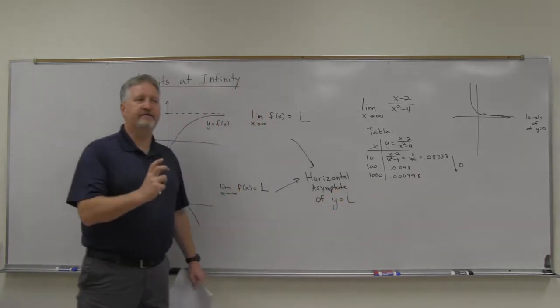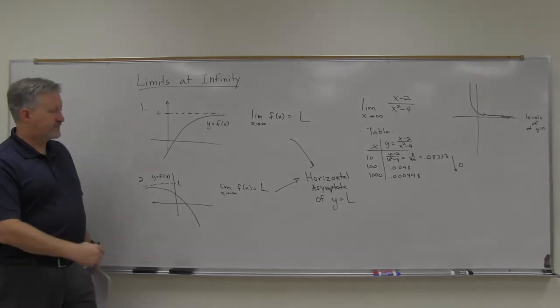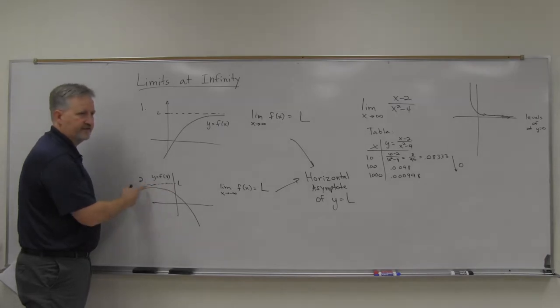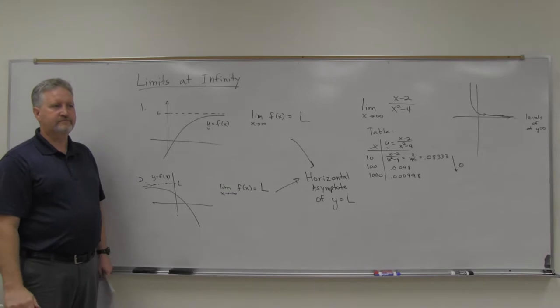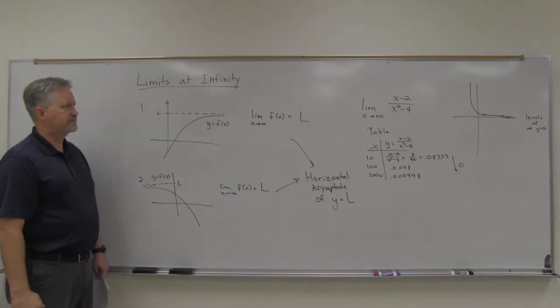Remember, horizontal line. Horizontal line is y equals a number, and so this horizontal asymptote, that's just giving kind of a name to this dotted line here. That dotted line is y equals L. And it's a horizontal asymptote in those cases. Okay?